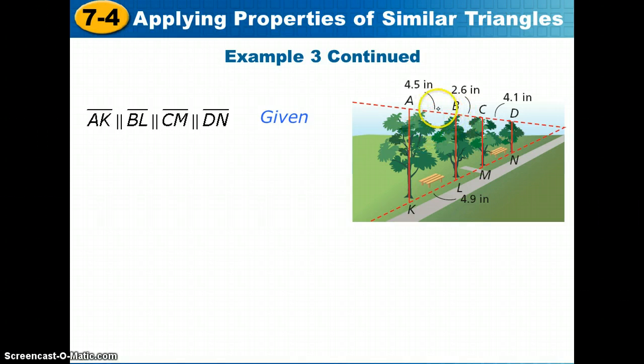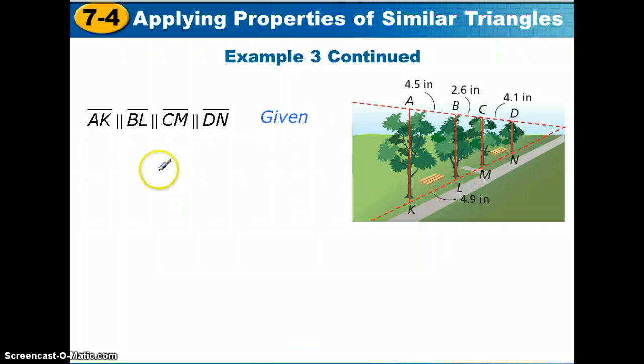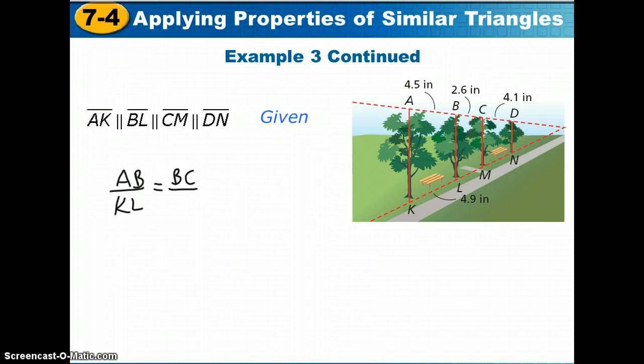We can set up a proportion that states that AB over KL would have to be the same ratio as BC over LM. Now we just fill in what we know. AB is 4.5, KL is 4.9. That would equal BC, which is 2.6, over LM, which is my unknown. And this is a proportion that we solved using the cross-products property.